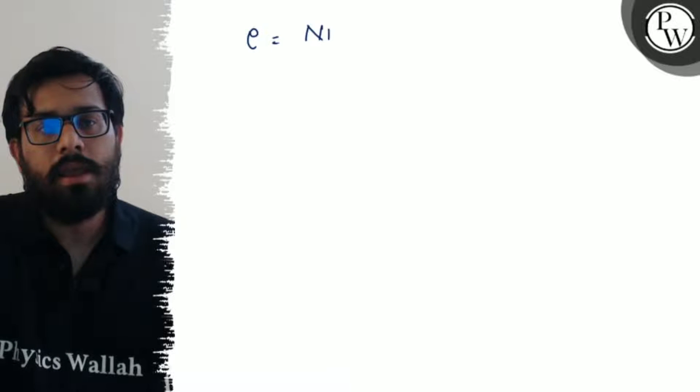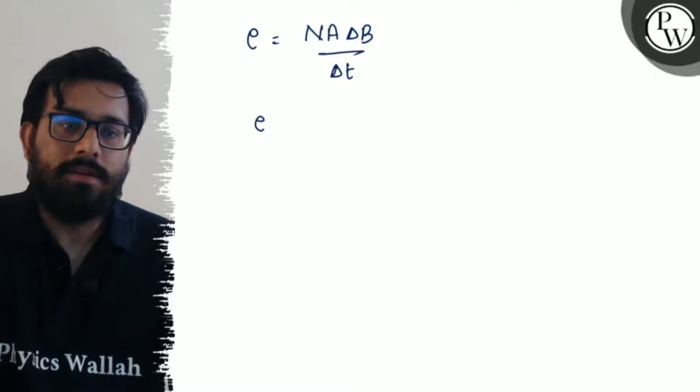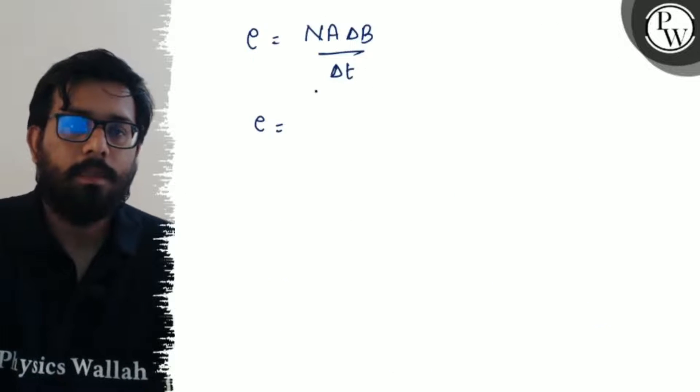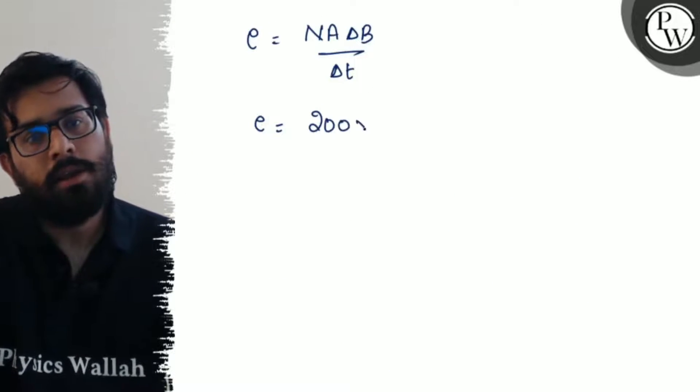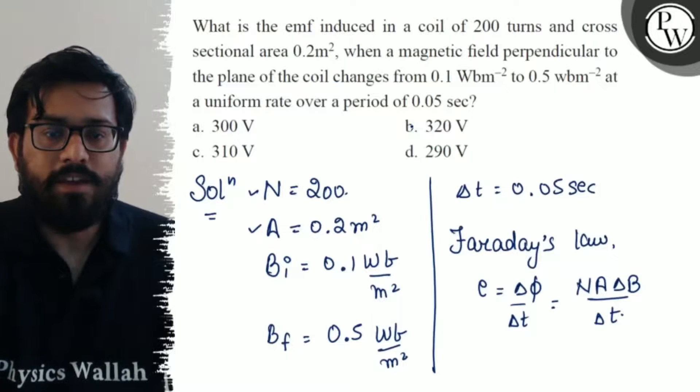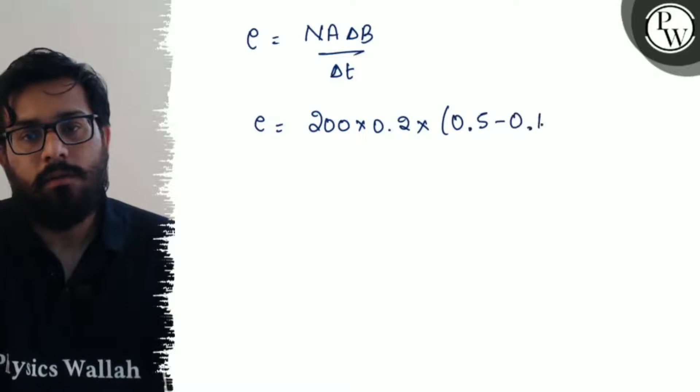Solving it further, so E comes out to be N A delta B by delta t. Putting the values, number of turns and area cross-sectional is given as 200 and 0.2, so 200 into 0.2 into delta B can be written as 0.5 minus 0.1.